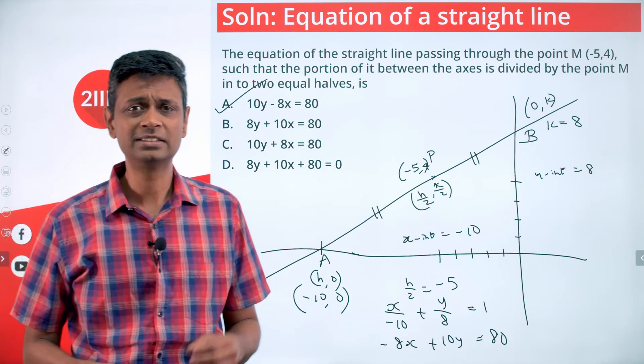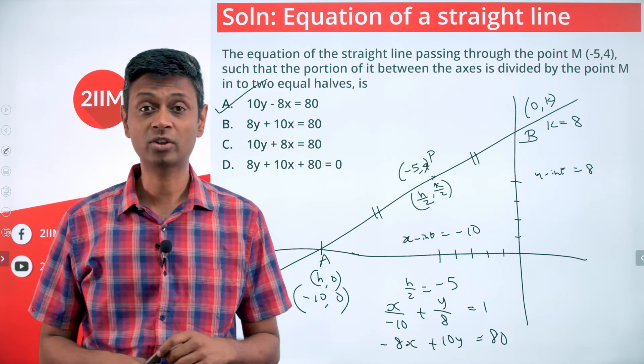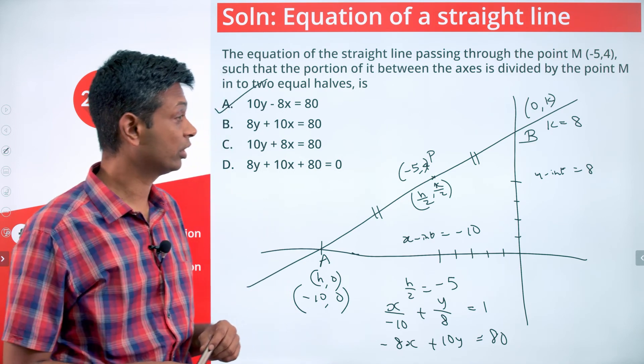(-10, 0) sits on this, (0, 8) sits on this. Both satisfy this. The idea here is that the point M is the midpoint of the segment AB, where A has coordinates (h, 0) and B has coordinates (0, k).